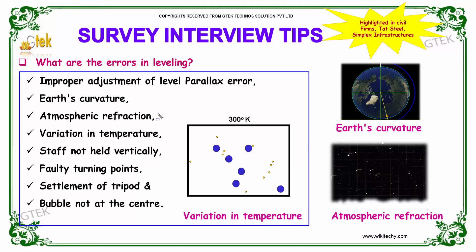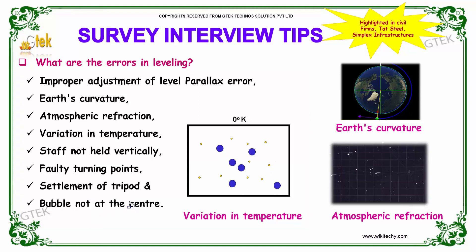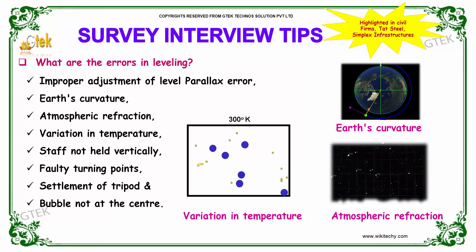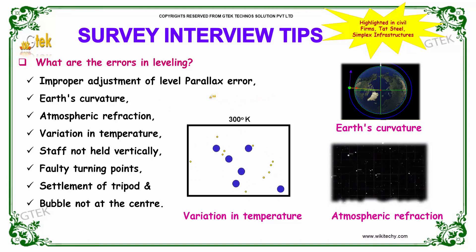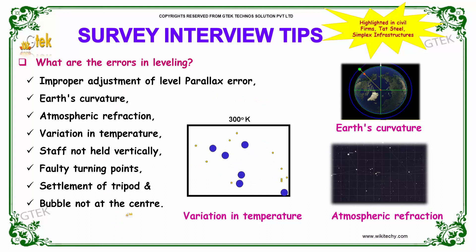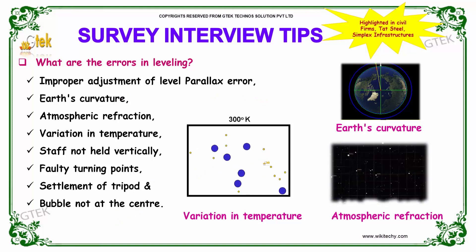Faulty turning points will lead to error in levelling. Settlement of the tripod, and if the bubble is not in the centre, these form a majority of errors in levelling. So these are the errors that could possibly occur while you perform levelling in your survey.